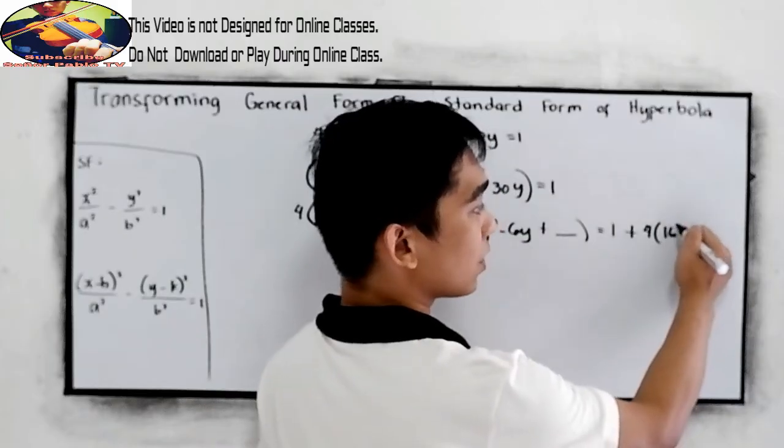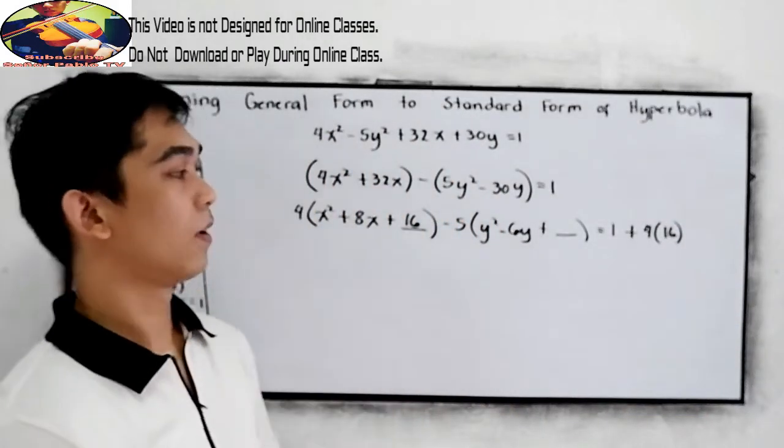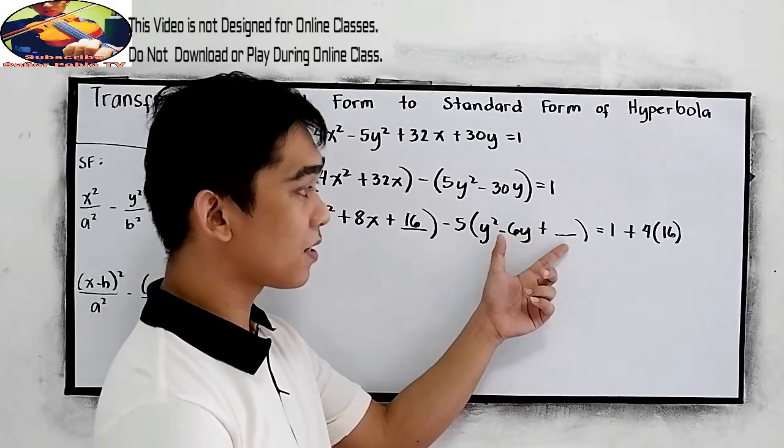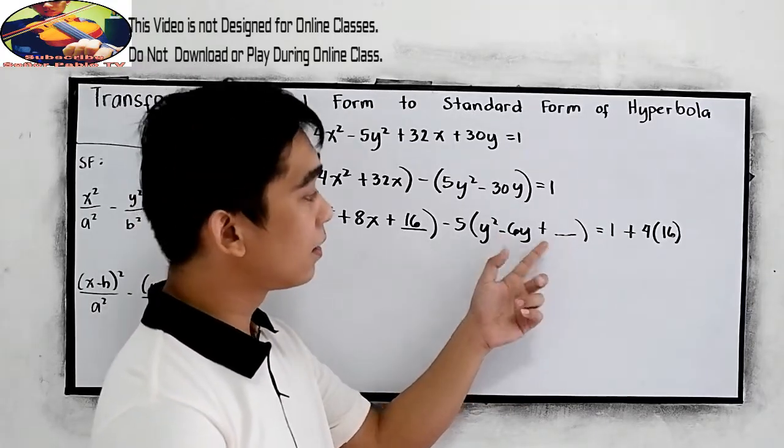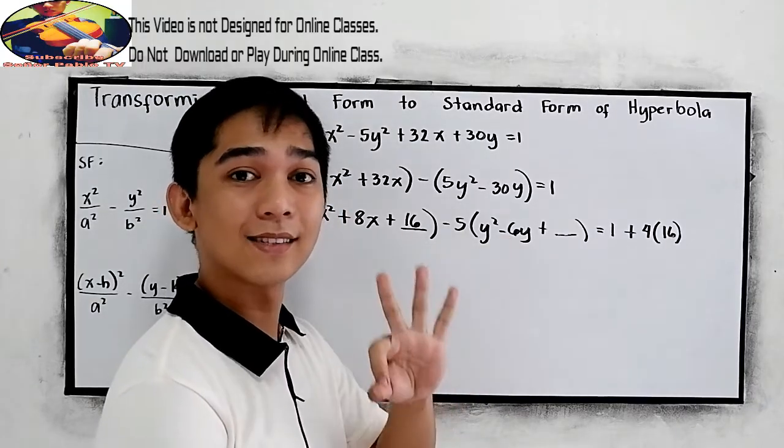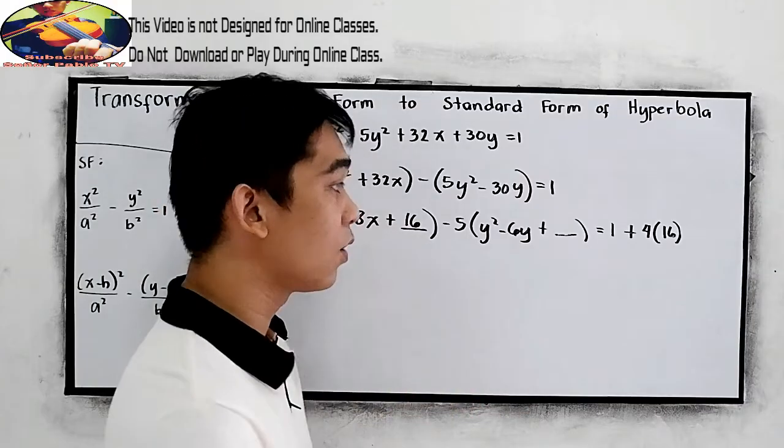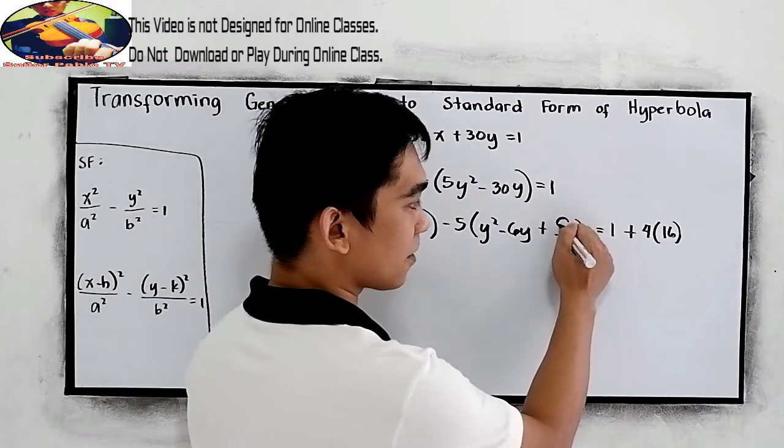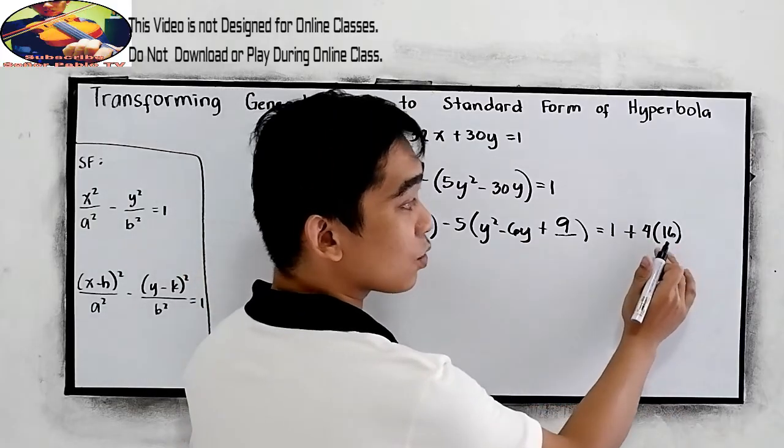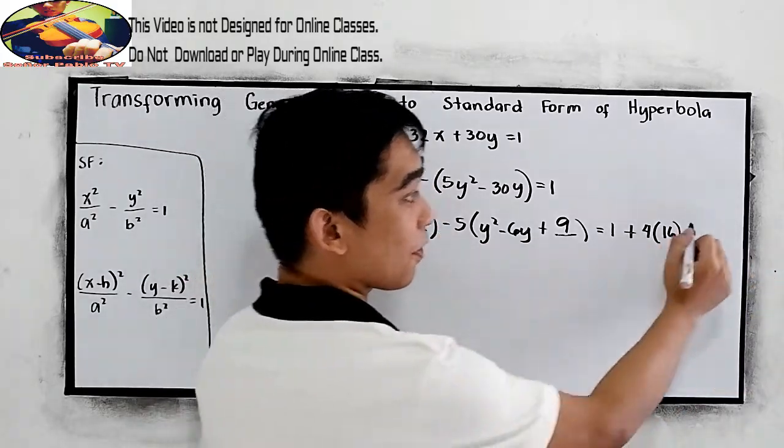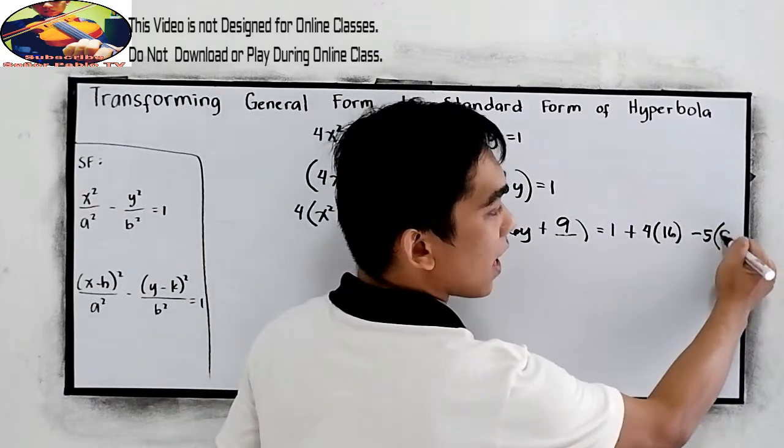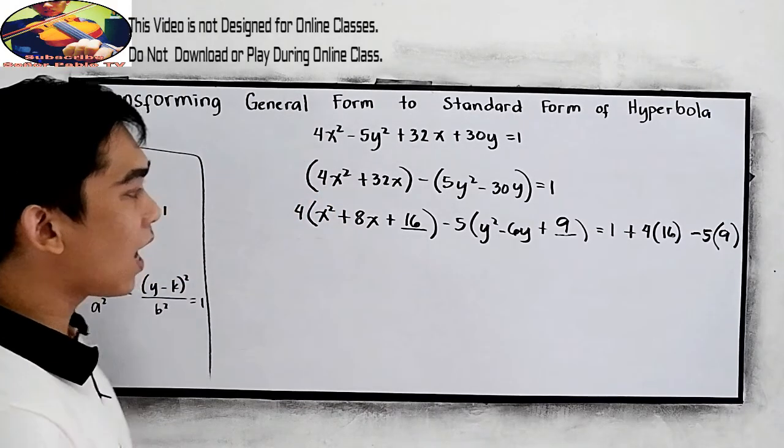Now, let us make this a perfect square trinomial. Negative 6 divided by 2, that is negative 3. Negative 3 squared, which is positive 9. Of course, we need to add that into our right side. So, that's negative 5 times 9.